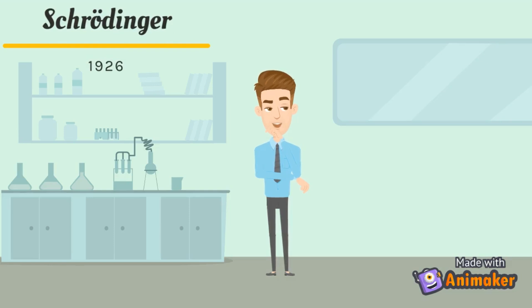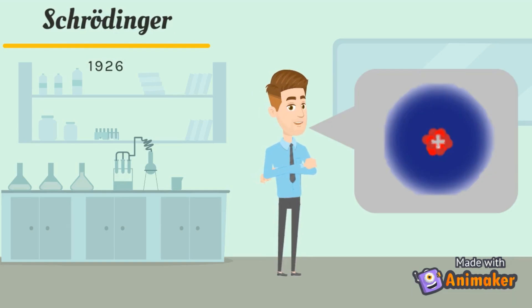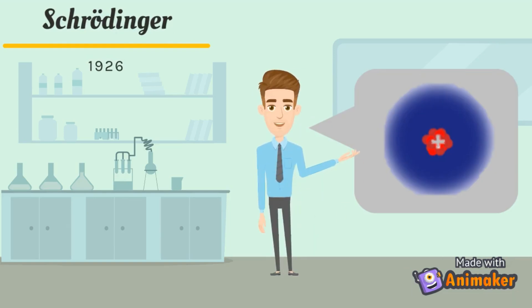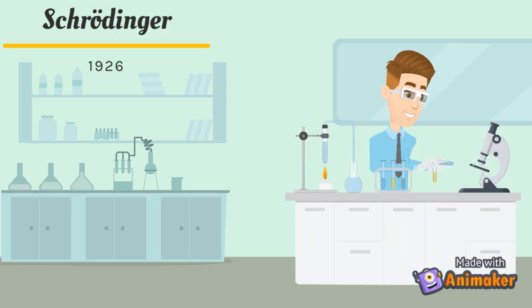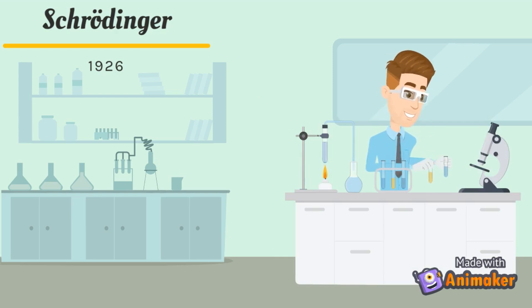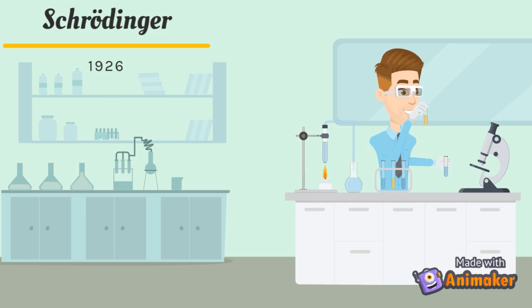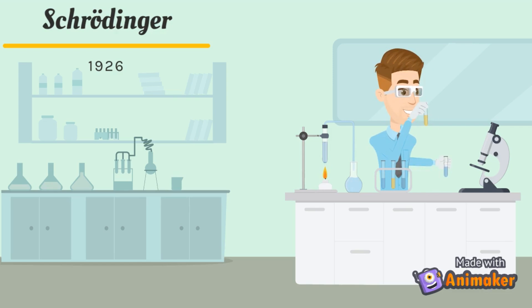There is something wrong with Bohr's theory. The electron cannot be found in a fixed orbit — maybe electrons do not move in a fixed position around the nucleus. They behave like a wave, which is why it is impossible to know the exact location of the electron. Erwin Schrödinger found that electrons do not move in orbits but in a cloud where their position is uncertain. His theory is still widely accepted as the most accurate model of the atom.